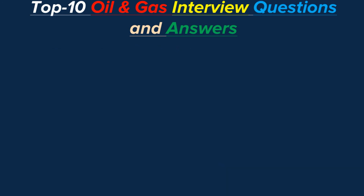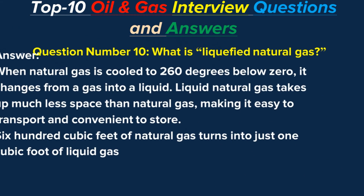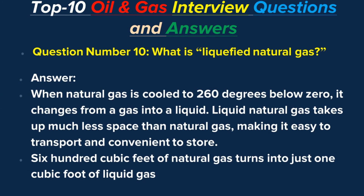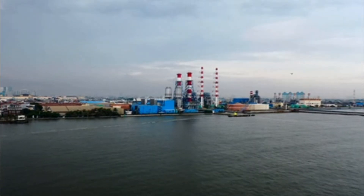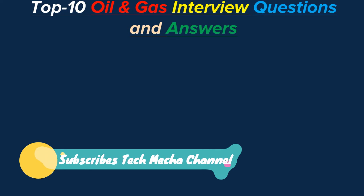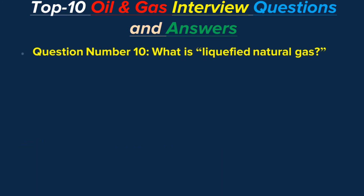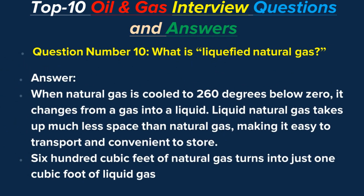Question number ten: What is liquefied natural gas? Answer: When natural gas is cooled to 260 degrees below zero, it changes from a gas into a liquid. Liquid natural gas takes up much less space than natural gas, making it easy to transport and convenient to store. 600 cubic feet of natural gas turns into just one cubic foot of liquid gas.